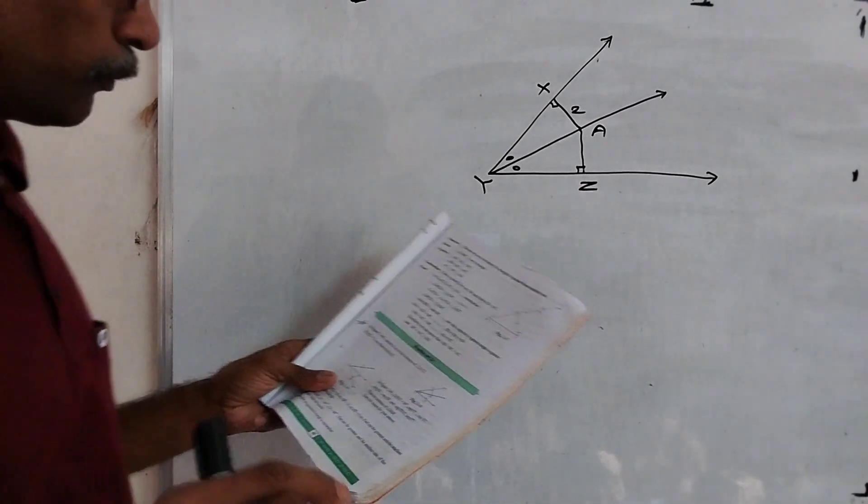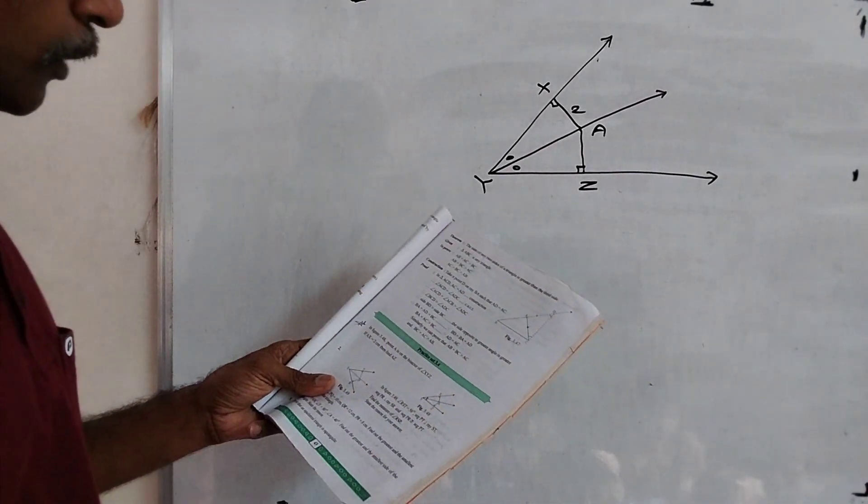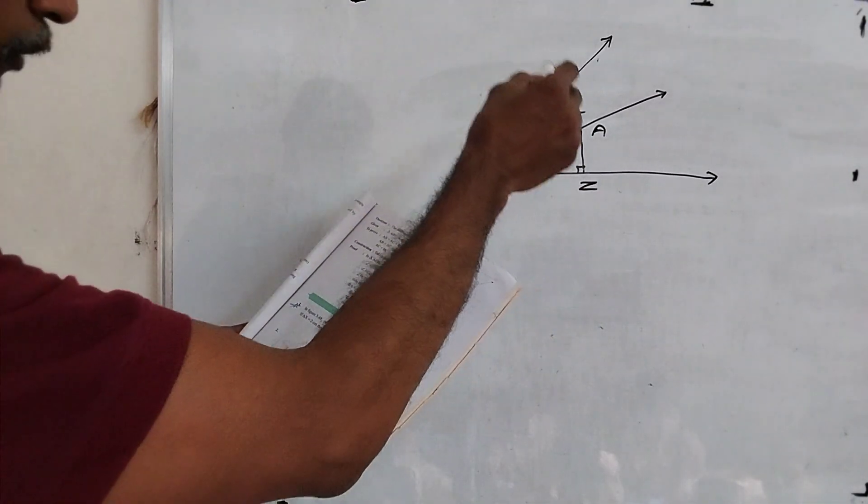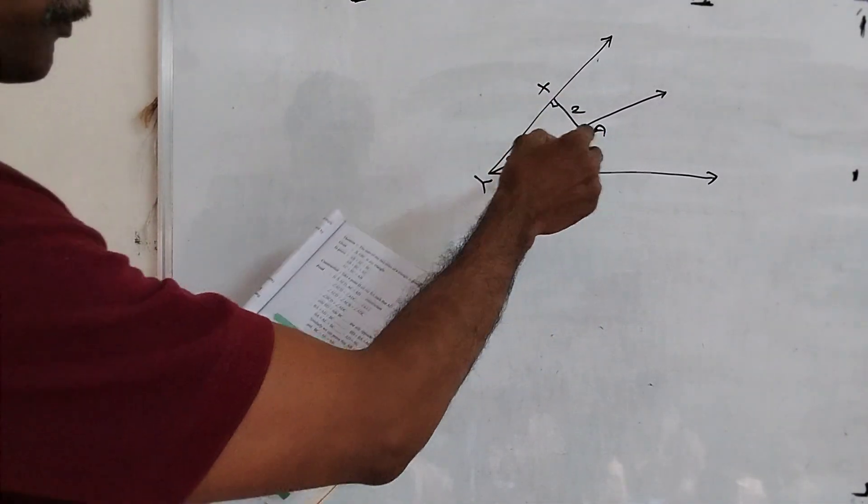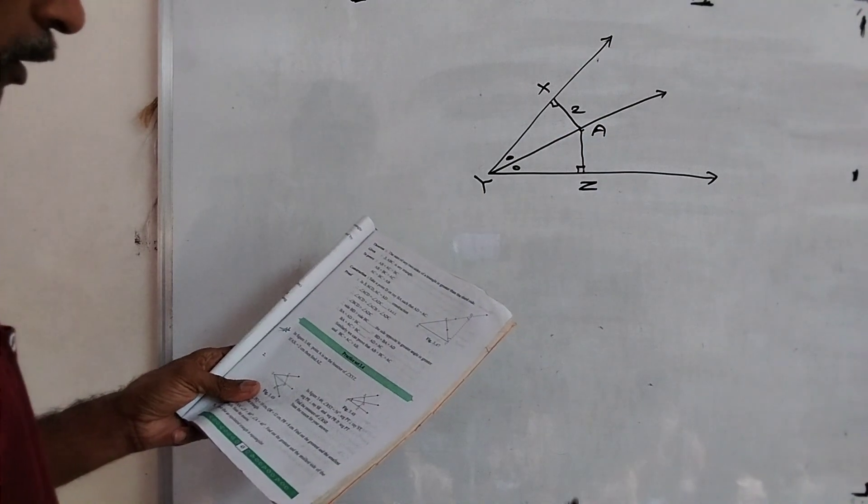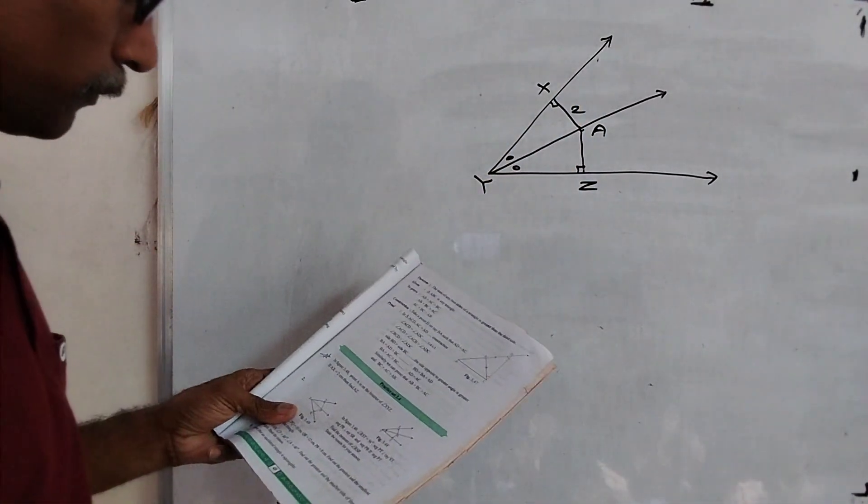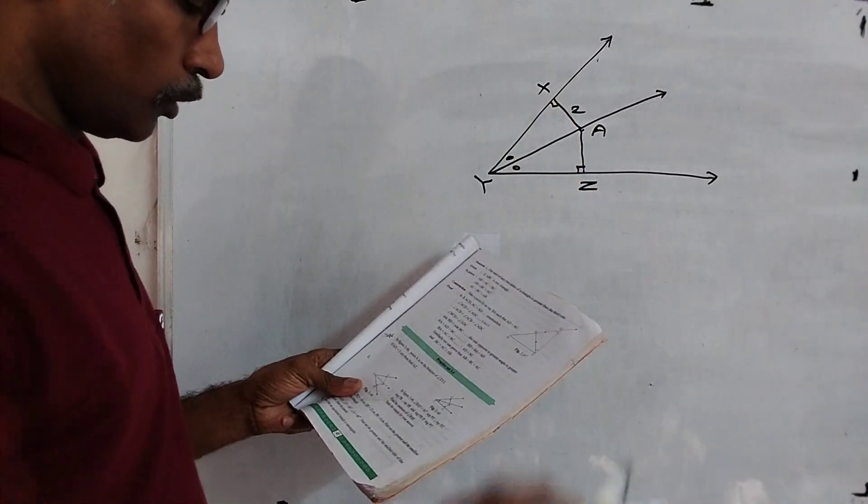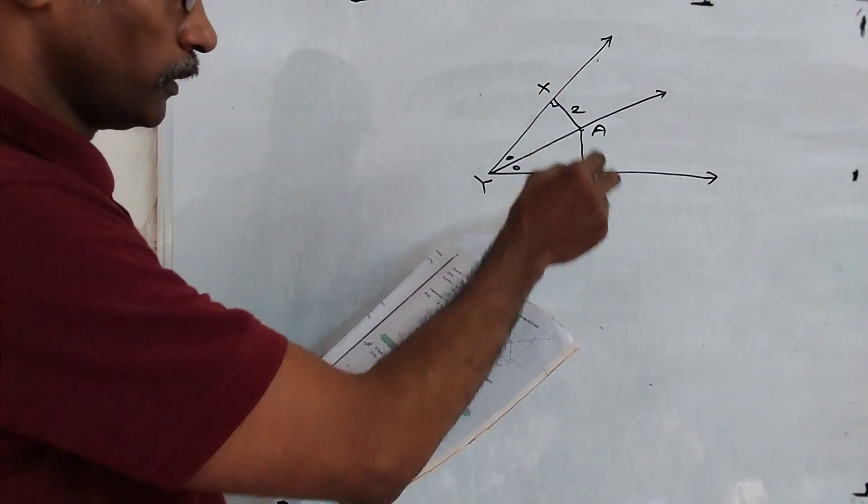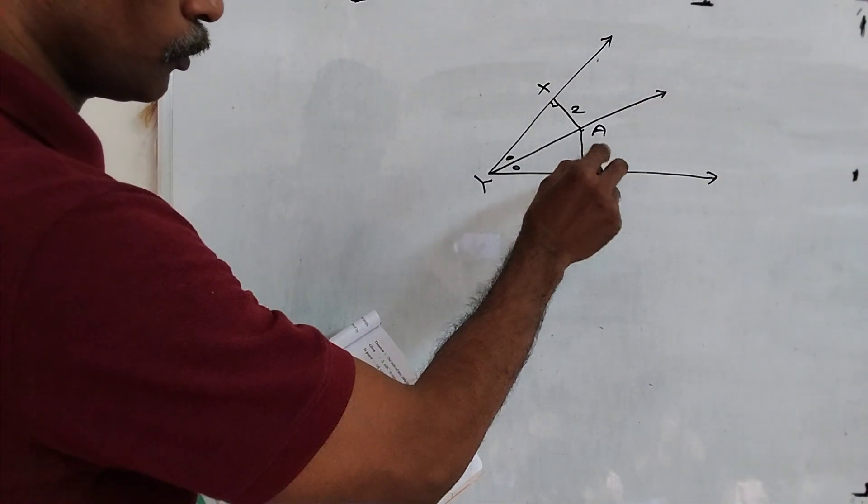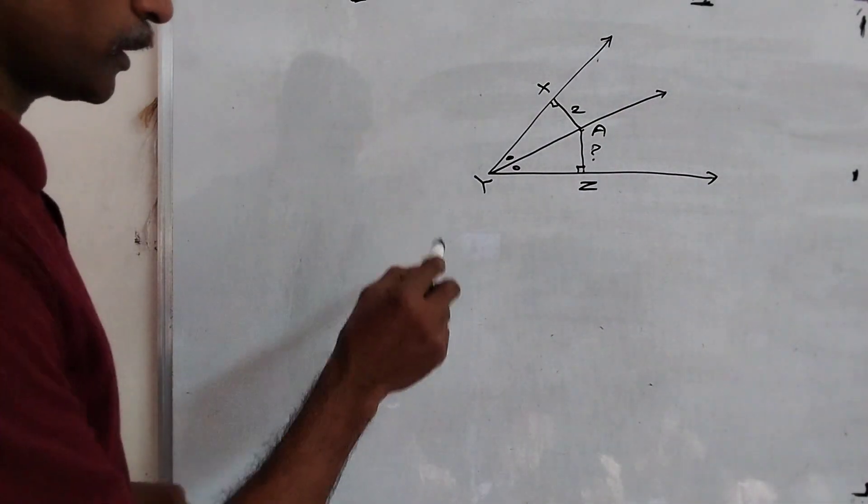Practice tip 3.4, Question No. 1. In figure 3.48, point A is on the bisector of angle XYZ. If AX is equal to 2 centimeters, then find AZ. We don't know AZ. Now see here carefully.